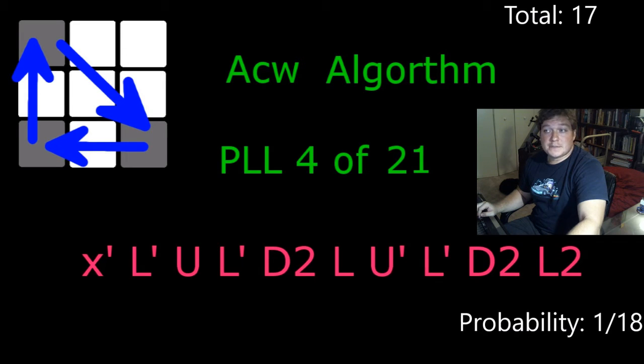The ACW, its mirror. There's yet again four ways, one 18th probability, total 17.